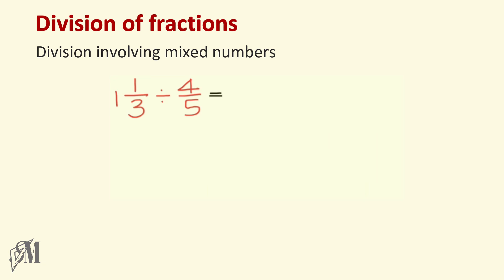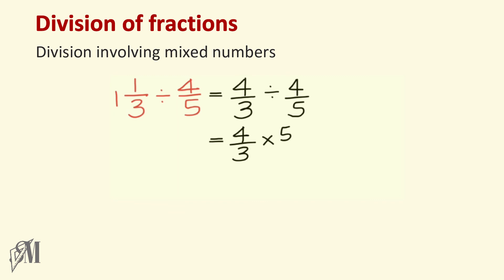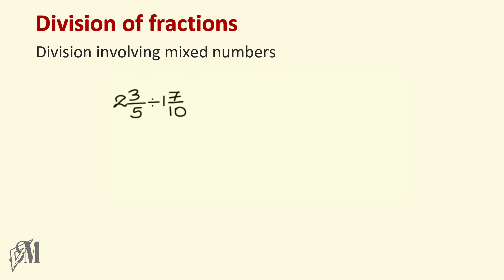The next example: one and one third divided by four over five. Convert one and one third into an improper fraction — that is four over three — divided by four over five. Convert to multiplication: four over three multiplied by five over four, the reciprocal. The fours cancel, so the answer becomes five over three. Since this is an improper fraction, convert it to a mixed number — the answer becomes one and two over three.